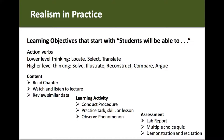Learning activities in a realist classroom might include conducting procedures — the scientific method is heavily used at some level. Students might have a practice lesson where they practice a skill that later becomes an assessment, and they observe phenomena, which could range from field work to observing behavior. Assessments include lab reports, multiple choice quizzes for quick recall, and any kind of demonstration or recitation.